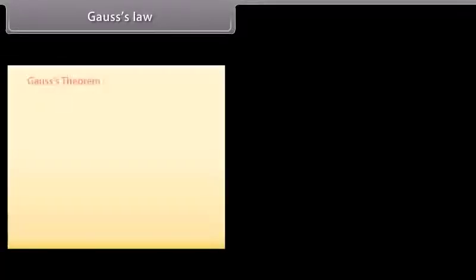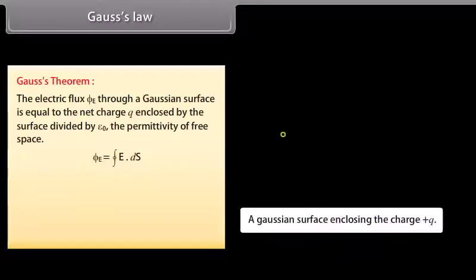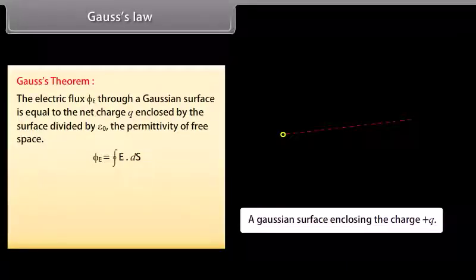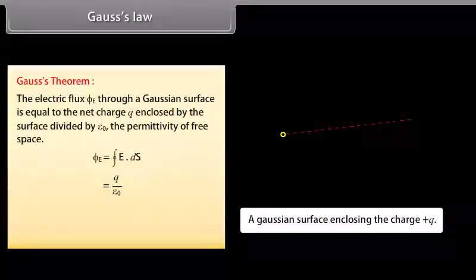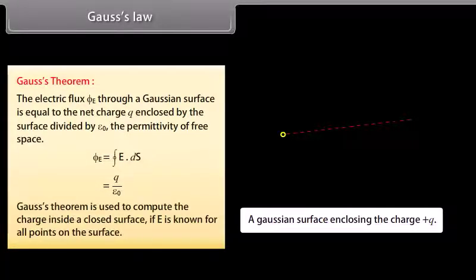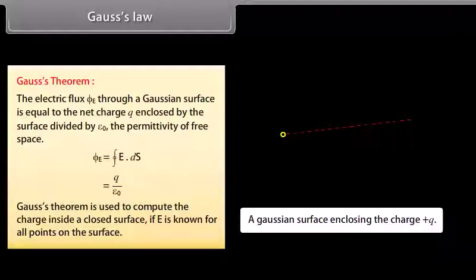Gauss's law (Gauss's theorem): The electric flux φE through a Gaussian surface is equal to the net charge q enclosed by the surface divided by ε₀, the permittivity of free space. Gauss's theorem is used to compute the charge inside a closed surface when E is known for all points on the surface.